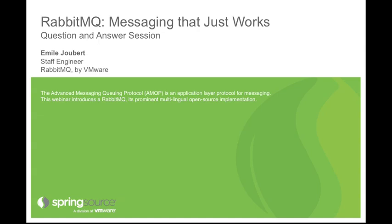Can RabbitMQ act as a client to any other AMQP broker in order to chain from another broker? That's something generally called federation. RabbitMQ does have a plugin called Shovel, which lets you do that. It allows you to connect any two brokers together, acting as a client to one and sending all messages from one queue to another exchange. If you look at the plugins on the RabbitMQ website, you will see a link to the Shovel, and that answers exactly the question posed here.